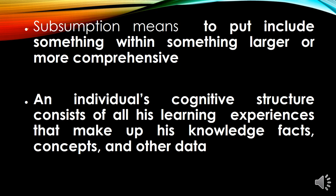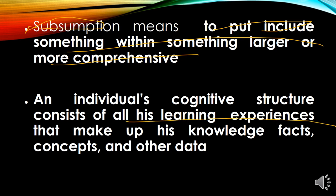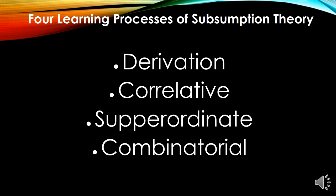Subsumption means to put or include something within something larger or more comprehensive — give and show learners the bigger picture so they will understand it. An individual's cognitive structure consists of all their learning experiences that make up their knowledge, facts, concepts, and other details. The four learning processes of subsumption are: derivation — from concept to specific; correlative — the concept of assimilation, elaborating on what you know; superordinate — from specific to general, examples before concept; and combinatorial — combining what you learned, even from different concepts, to better understand them.